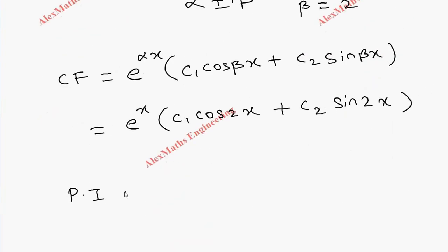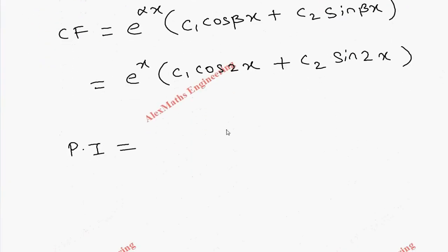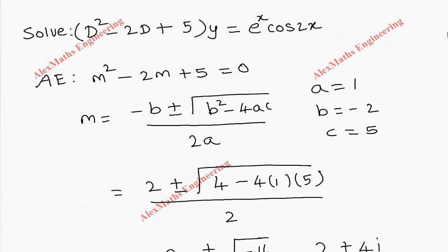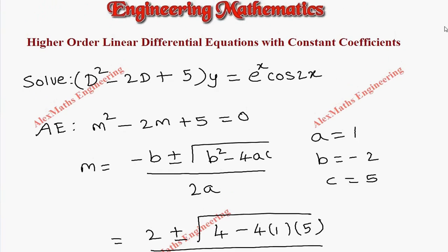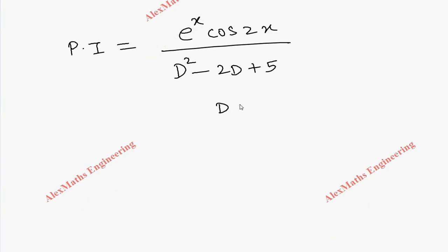For the particular integral, we have a product of exponential and trigonometric: e^x times cos(2x). We write that in the numerator as e^x cos(2x), divided by D squared minus 2D plus 5 in the denominator. As per the procedure, D should be replaced by D plus 1, because the exponent is 1·x, so a equals 1.